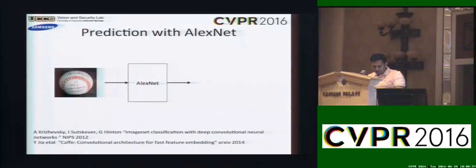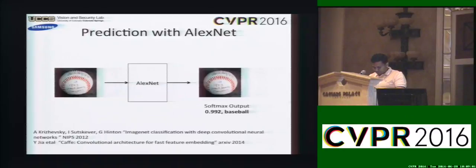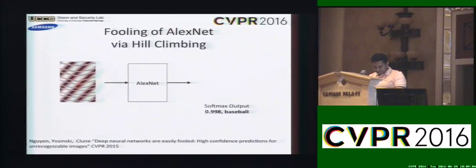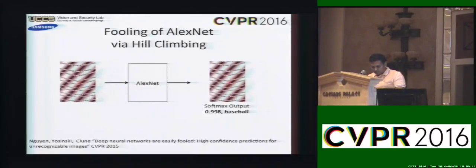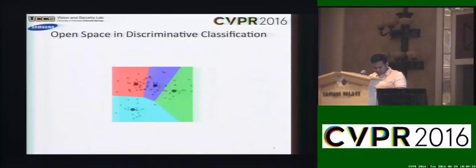This is a well-known phenomenon; however, things are far from being perfect. Recently, Nugent et al. have demonstrated that it is easy to produce fooling images using hill-climbing methods. These fooling images are unrecognizable to humans, but state-of-the-art CNNs classify them as known objects with very high confidence. The closed-set nature of CNNs forces them to choose from one of the known classes, leading to such artifacts.